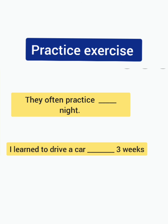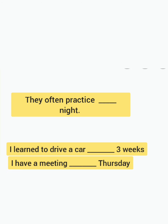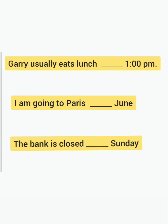Let's take a look at the practice exercise. Fill in the blanks: They often practice — night. I learned to drive a car — three weeks. I have a meeting — Thursday. Gary usually eats lunch — 1 PM. I'm going to Paris — June. The bank is closed — . Fill in the answers in the comment section and let's see how many get them correct so we can help each other out.